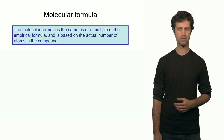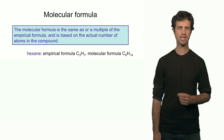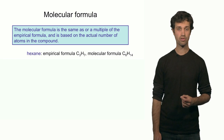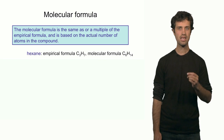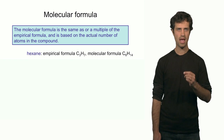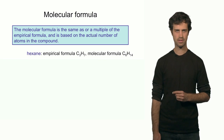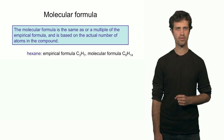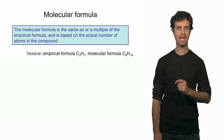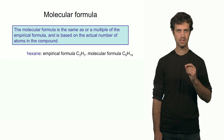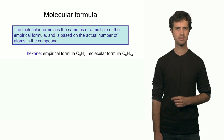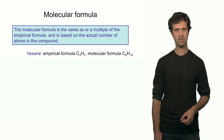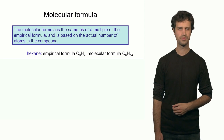Let me give you an example. Hexane has as its empirical formula C3H7. The molecular formula, however, is twice that — it is C6H14. So the empirical formula is multiplied by 2.